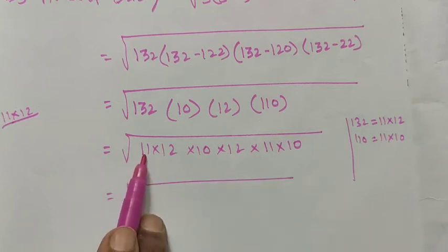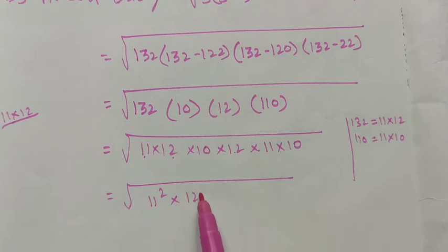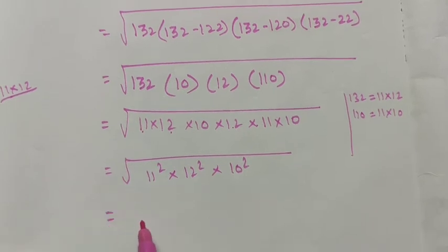Now pair the terms: 11 times 11 is 11 square, 12 times 12 is 12 square, 10 times 10 is 10 square. This expanding method is very easy to find the square root. Now square root will be cancelled, so we get 11 into 12 into 10.